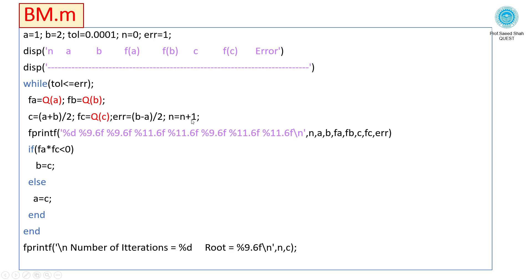n = n+1, number of iterations. fprintf shows the output in table form.